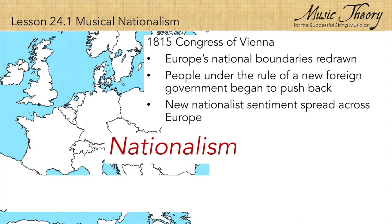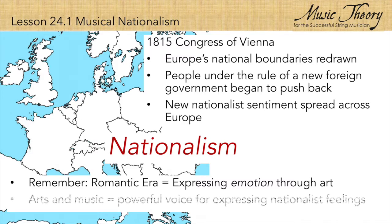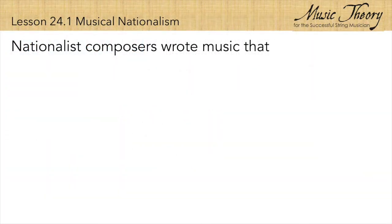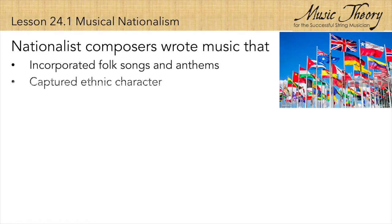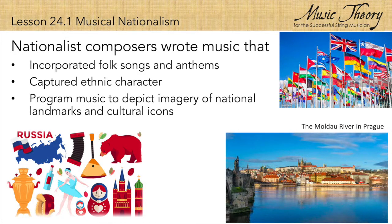It was early in the Romantic era when arts and music were already exploring the expression of emotion, so naturally the arts became a powerful voice for this new nationalistic movement. Some nationalist composers incorporated folk songs and patriotic anthems into their orchestral music. Others used more subtle compositional devices to create an ethnic character in their music, and some wrote program music that evoked images of national landmarks and cultural icons.